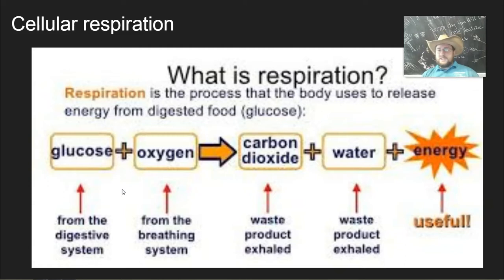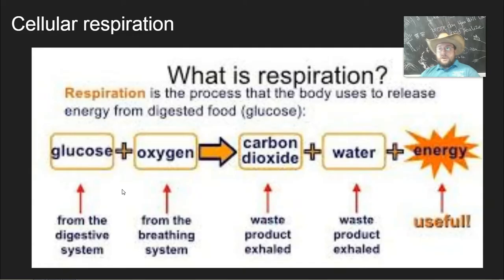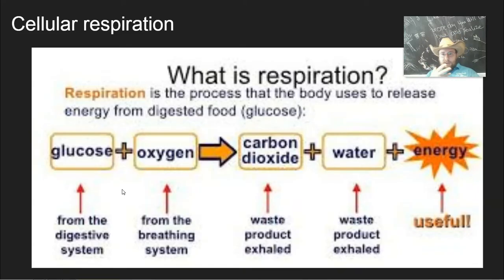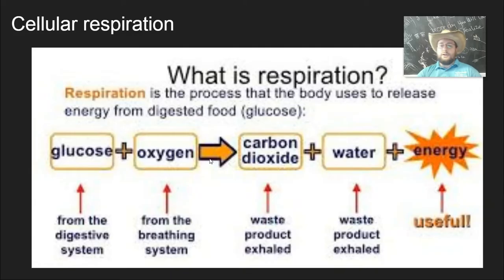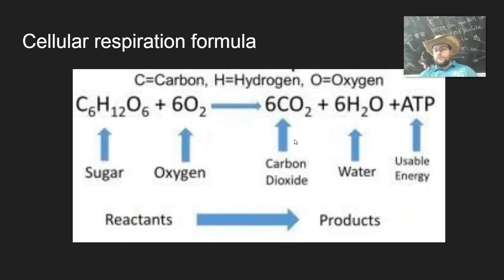Oxygen is captured from the ecosystem with the help of gills if you're a fish, lungs if you're a land animal, or directly from the environment if you're a plant or something small living in water. Bugs use a network of tubes inside of them to distribute oxygen. Whatever you are, you need that oxygen to burn the glucose. The glucose then becomes carbon dioxide, which is exhaled.